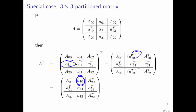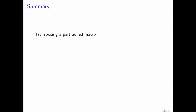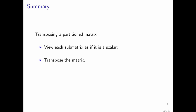What happens to the element in the middle? The element in the middle gets transposed, but then we recognize that it's a scalar, so you just get that element right back. So in summary, transposing a partitioned matrix means: view each submatrix as if it's a scalar, transpose the matrix of symbols or submatrices, and then transpose each submatrix — or put a transpose on each of the symbols.